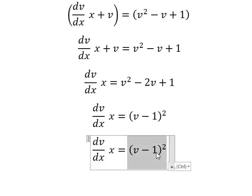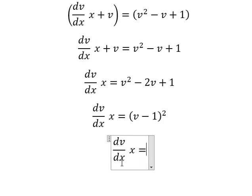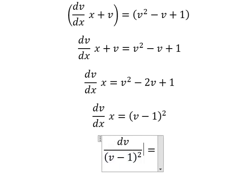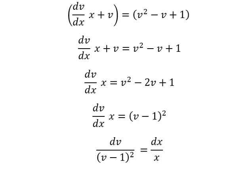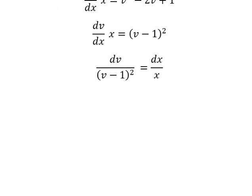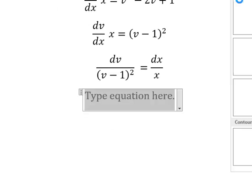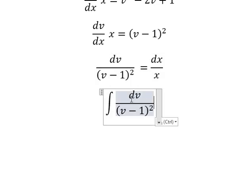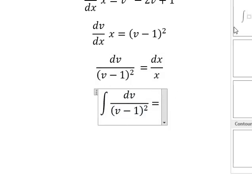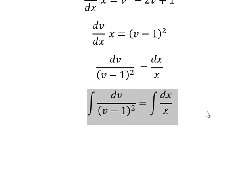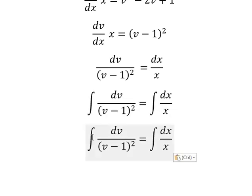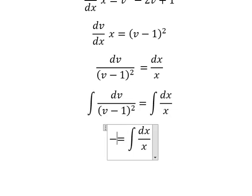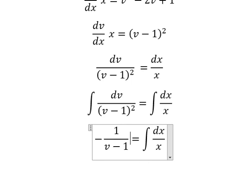I will put this one on the left, the x goes to the right. Next I will integrate both sides. The integration of this one gives negative 1/(v - 1). The integration of this one gives ln|x|, and I will add the constant c.